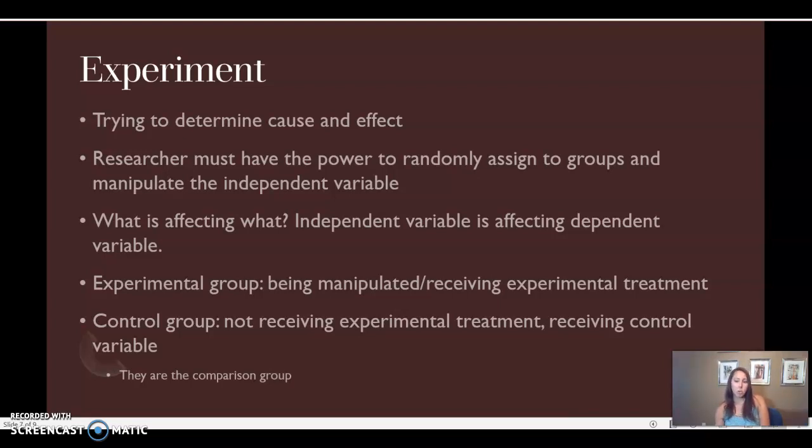If I cannot randomly assign you into a group, it is not a true experiment. So, for example, I could not do a true experiment on does binge drinking during pregnancy predict child's intelligence? Because I could not ethically randomly assign pregnant women to, you are going to binge drink two to three times a month while you're pregnant, and you are not. It would be totally unethical because I know that there could be a possibility of all sorts of bad things happening to those women that I am telling you to binge drink.